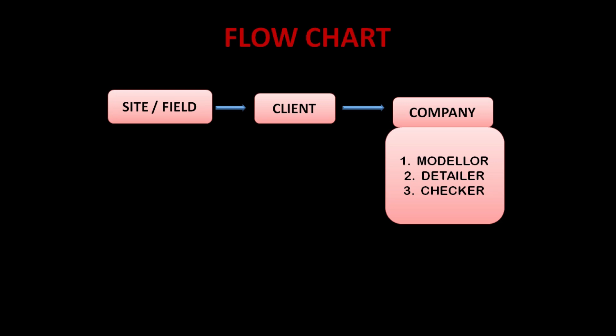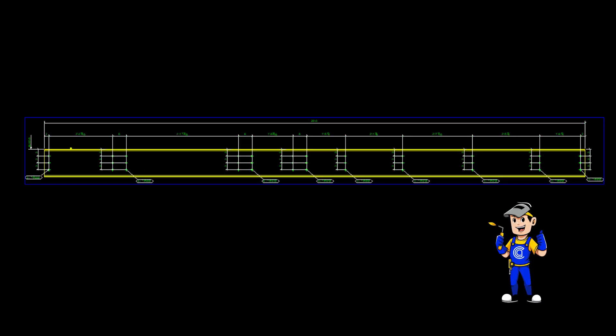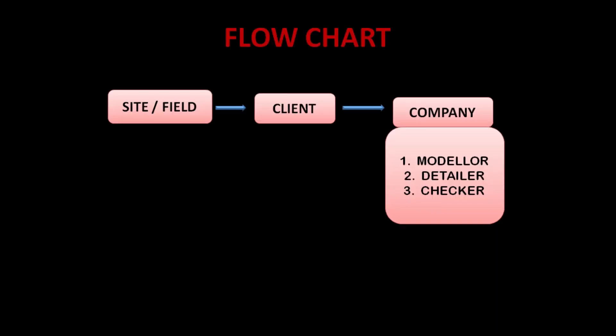The modeler's work is to create a 3D model by using the design drawings given by the client. After creating the model, the detailer has to create 2D drawings of the same model. If you give a 3D model directly to the fabricator, he cannot fabricate it because he won't know the proper lengths, bolt distances, and edge distances. The detailer creates 2D drawings providing all those details — length of the beam, edge distances, bolt distances — so the fabricator can understand.